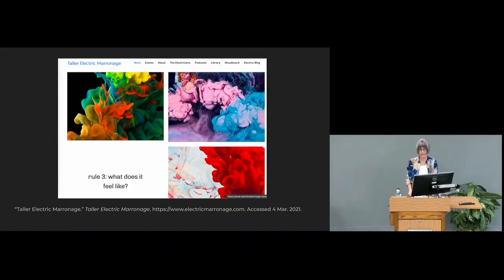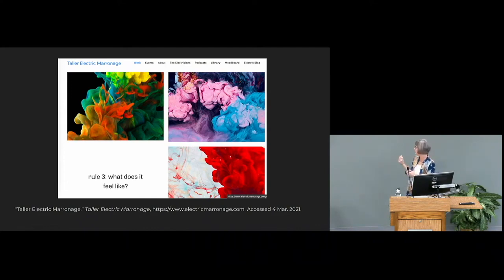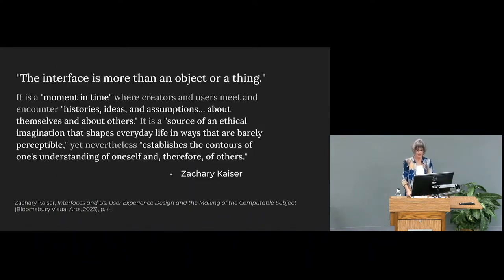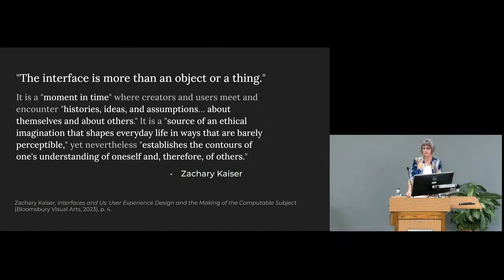As a humanities scholar, I think about digital design primarily in terms of the user interface — that point of contact between me as a creator, my work, and my readers. The interface is more than an object or a thing, says Zachary Kaiser here at MSU. He calls it a moment in time where creators and users meet and encounter histories, ideas, and assumptions about themselves and about others. It's a kind of social space — a source of ethical imagination that shapes everyday life in ways that are barely perceptible, establishing the contours of your understanding of yourself and therefore of others.